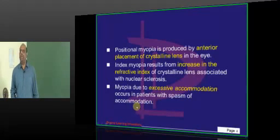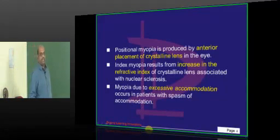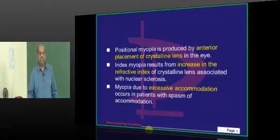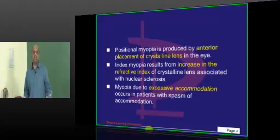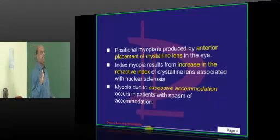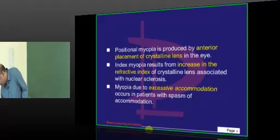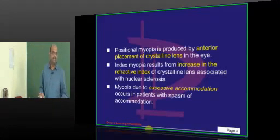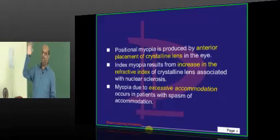Then any excessive accommodation due to spasm of accommodation. One scenario is uveitis — in uveitis, we give atropine basically to relieve the spasm of the ciliary muscle. So any ciliary muscle spasm is also responsible for the development of myopia. The common thread is: increased diameter, increased refractive index, increased spasm — increase equals myopia.